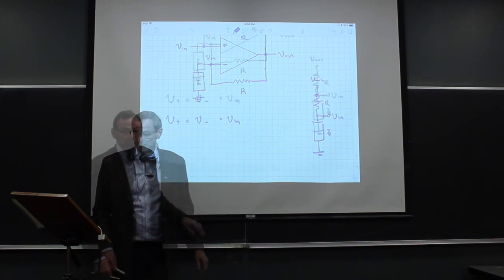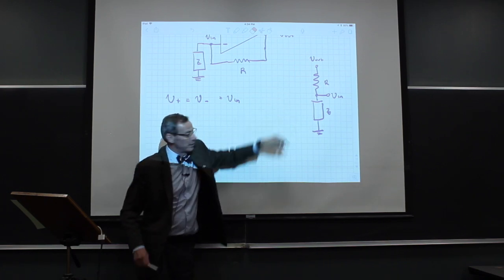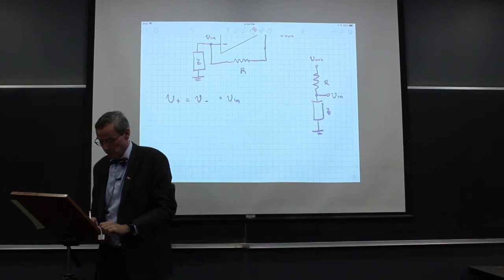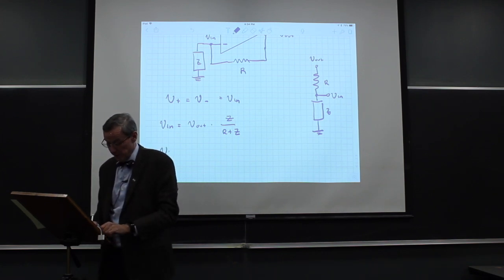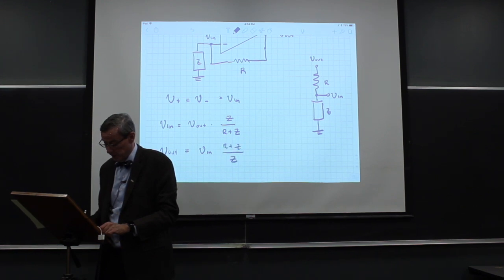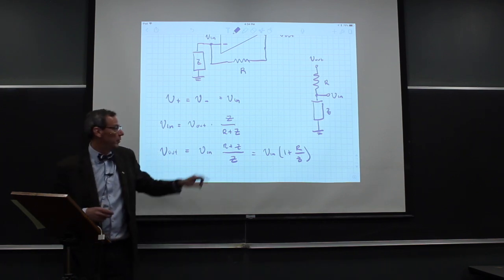That's just a voltage divider. We have V_out, V_in in the middle, and R and Z. So we know that V_in is going to be V_out times Z over (R + Z), or equivalently V_out equals V_in times (R + Z) / Z, which is V_in times (1 + R/Z). So there's the output voltage.